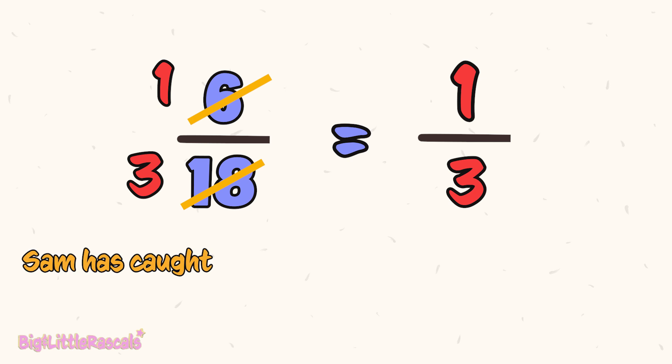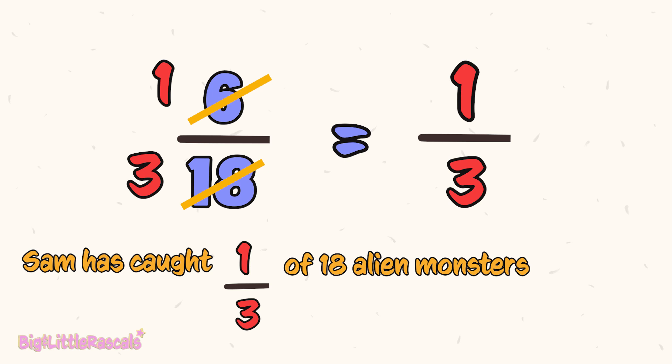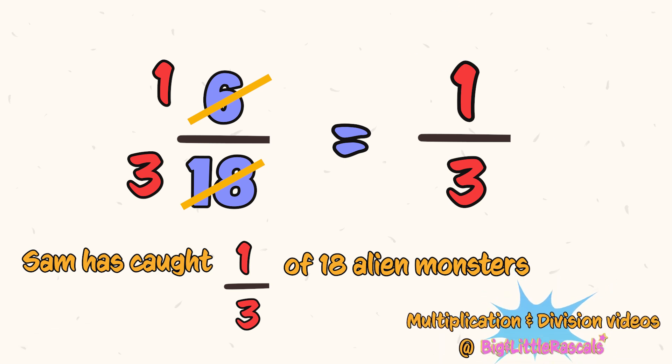So Sam has caught 1 third of the 18 alien monsters. Well done, Sam. If you're not familiar with division, not to worry — please watch our fun learning videos about division, only at Big Editor Rascal's Fun Learning Videos.